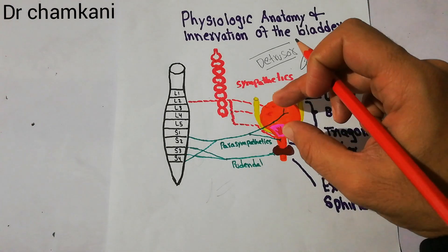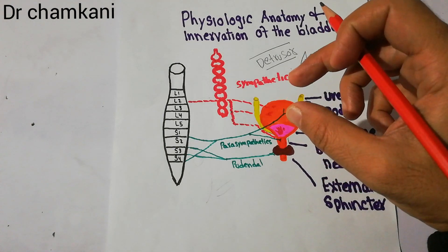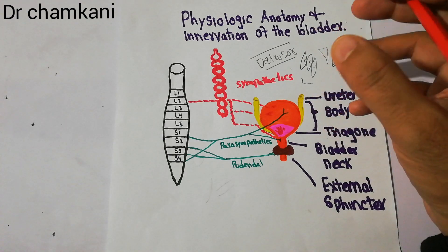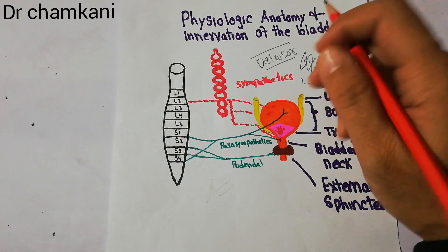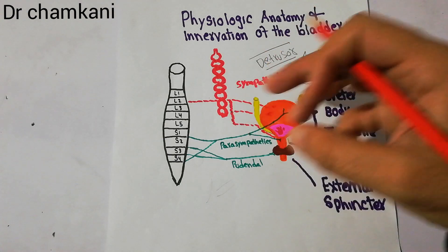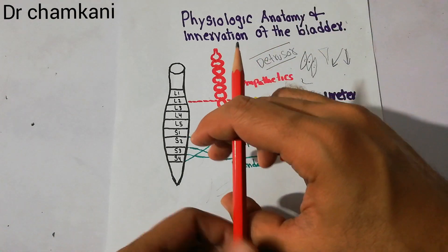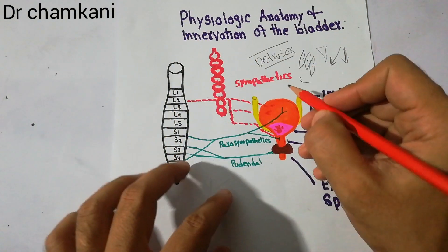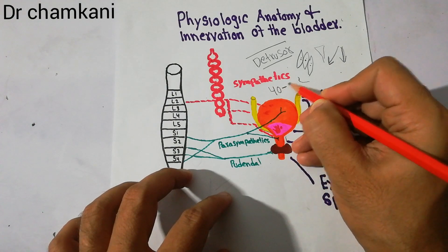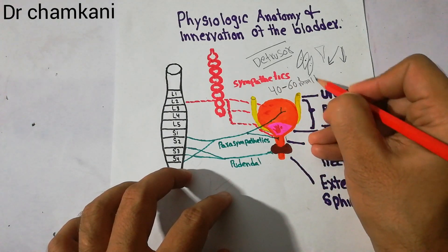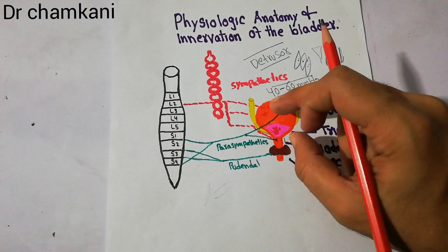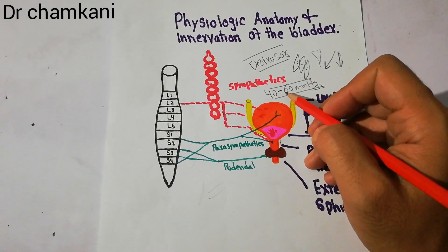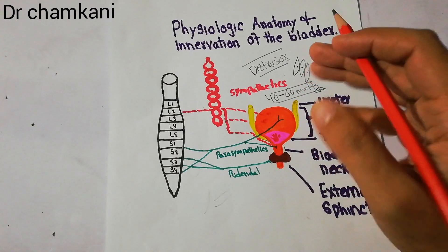The smooth muscles of the urinary bladder are called detrusor muscles. The importance of these muscles is that they can contract simultaneously. All the muscles in the urinary bladder will contract simultaneously, and when they contract, the pressure inside the bladder can go up to 40 to 60 millimeters of mercury, which can push the urine out of the bladder.